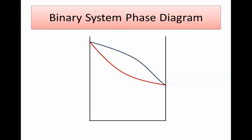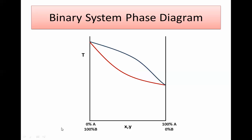For the binary system phase diagrams, for ideal systems, the x-axis is the composition — either x for liquid or y for vapor — and the y-axis is the temperature. You have two components A and B: one end is 100% A and 0% B, and as you go from left to right the percent A increases and percent B decreases. This is called the temperature-composition diagram.